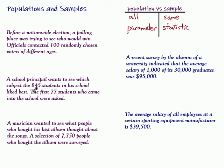So for these first three problems here, the first three situations, we want to identify the population and the sample in the situation. Before a nationwide election, a polling place was trying to see who would win. Officials contacted 100 randomly chosen voters of different ages.